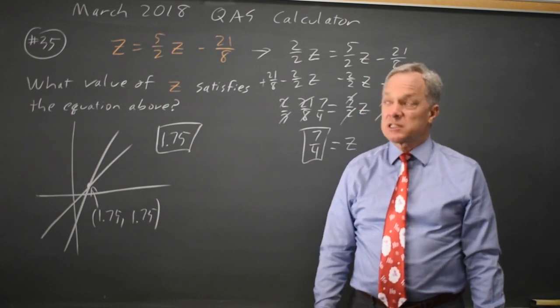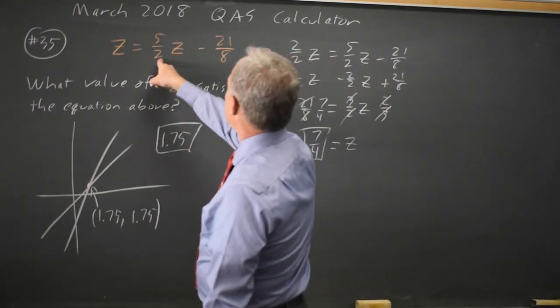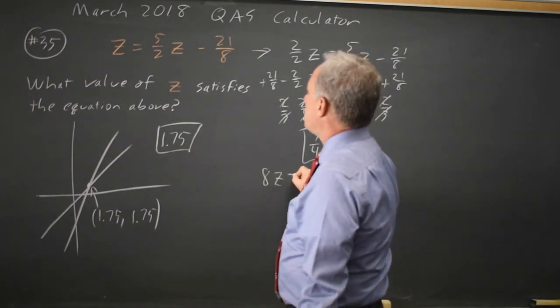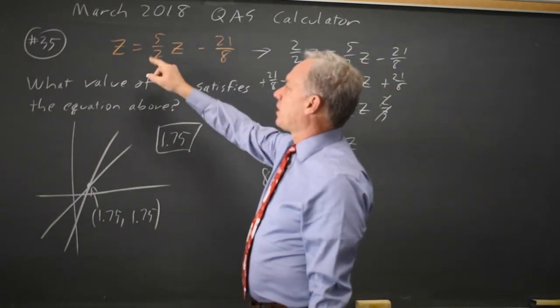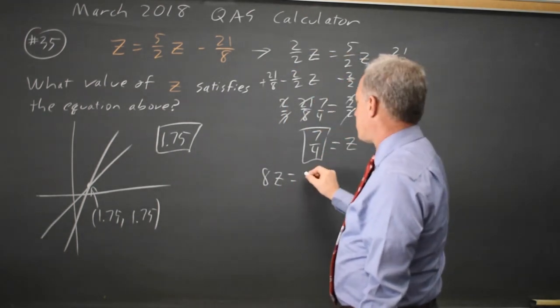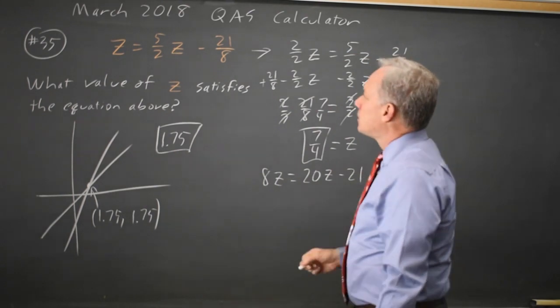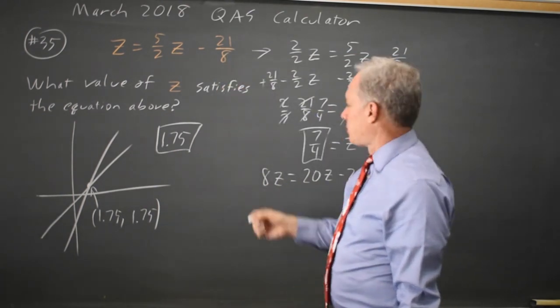If you're not fond of fractions and I'm not, you can multiply this through by 8 at the start to get 8z. 8 times 5 halves z equals 8 times 5 halves is 4 times 5, which is 20. 20z minus 21. I chose 8 because that's my common denominator.